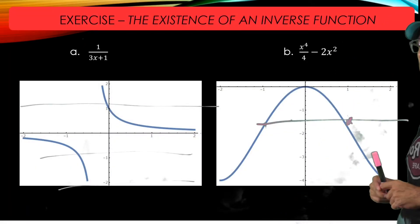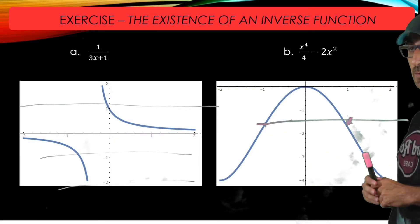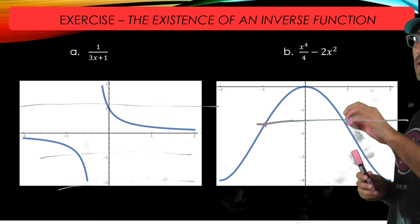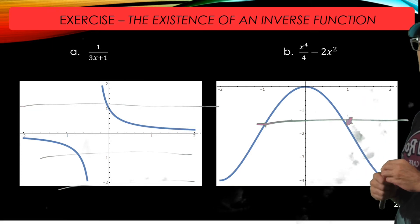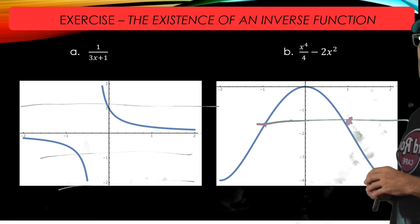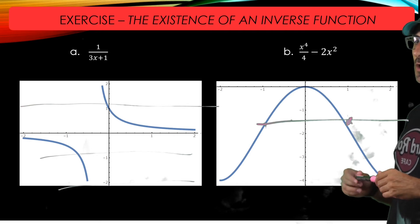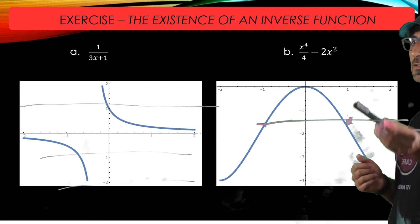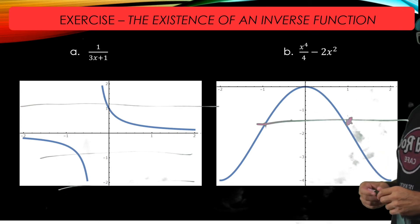And for this one, we found a counter example, like one and negative one for the points x1 and x2, such that the corresponding values are equal. So graphically, this is the verification of the nonexistence of the inverse function for this polynomial.